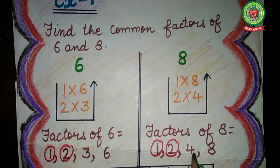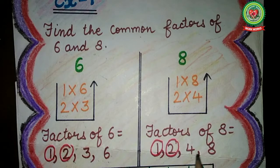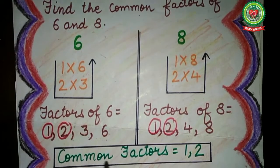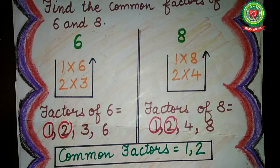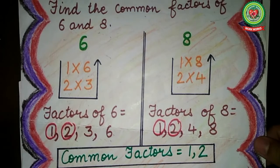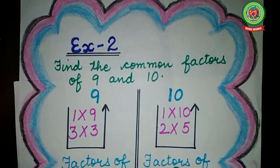Now, 3 and 6 are factors of 6 but not of 8, so we will not circle them. In the same way, 4 and 8 are factors of 8 but not of 6, so we will not circle 4 and 8. Our common factors are 1 and 2 — that means our circled numbers. So I got the common factors of 6 and 8. Now let us take one more example to understand it properly.